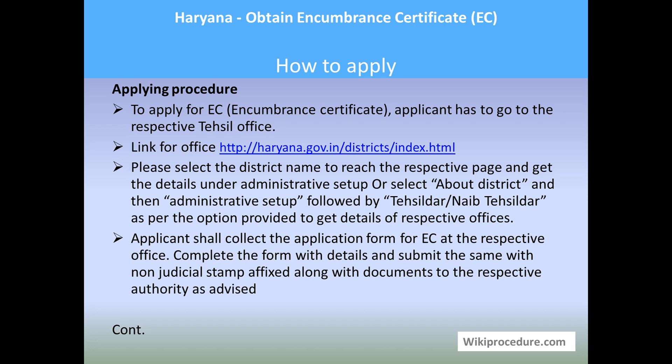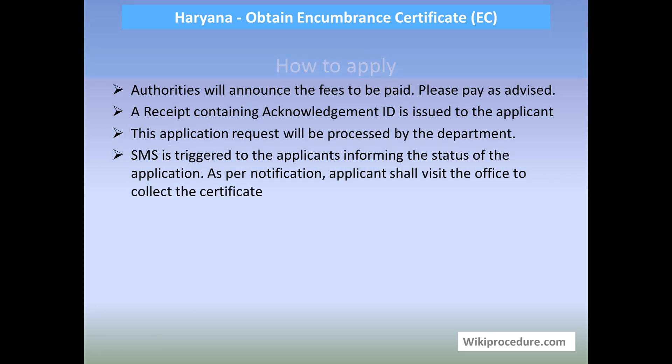Please go to the office directly. Obtain the form from the respective authority — if required, you need to pay for the application form. Complete the application form, affix the non-judicial stamp as advised, and attach all the documents. Submit them to the authority. The authority will check the details and documents. If everything is in place, they will ask you to pay the required fees. Go to the respective counter, pay the fees, and you will be given a receipt containing an acknowledgement ID. Please keep it safe for future reference.